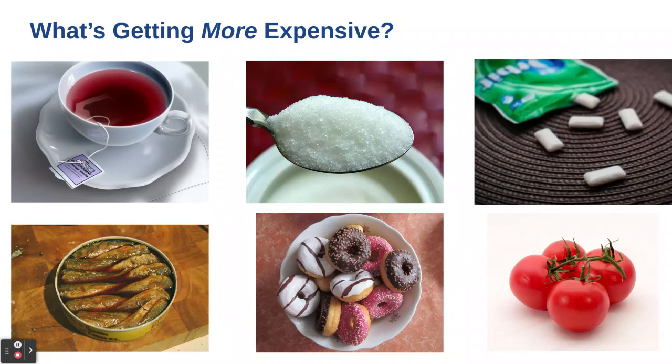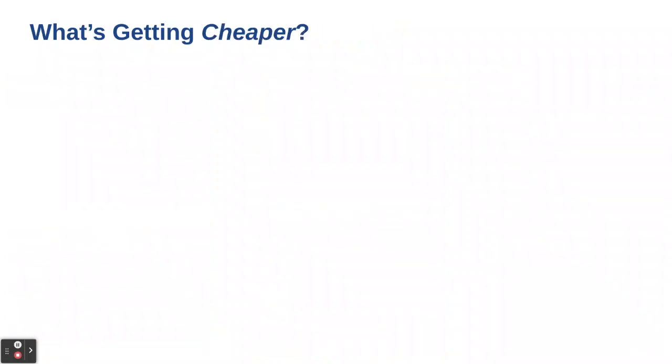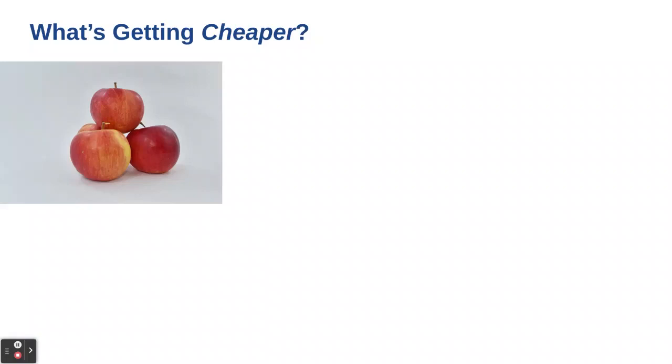But it's not all bad news. There is some good news for the bargain hunters out there. So let's talk about what's getting cheaper. Apples and citrus fruit are both down 2.3 percent.